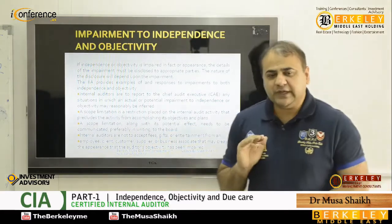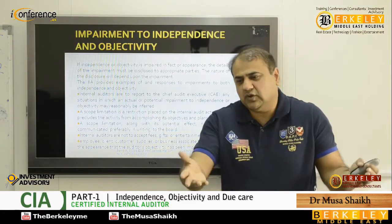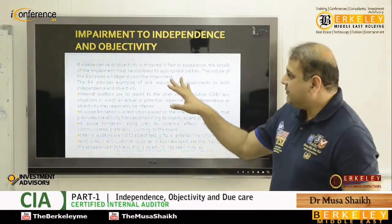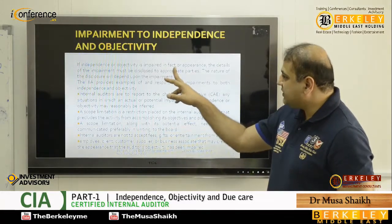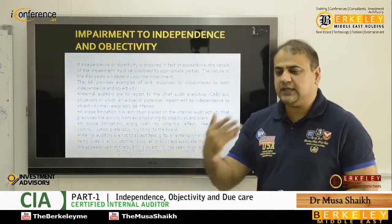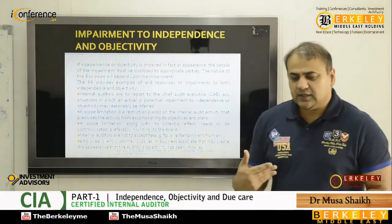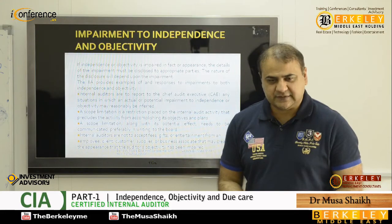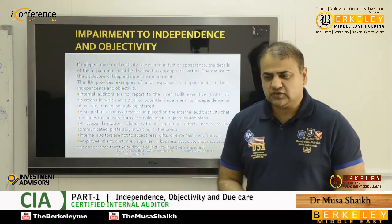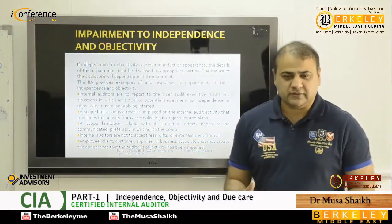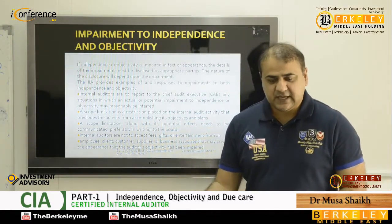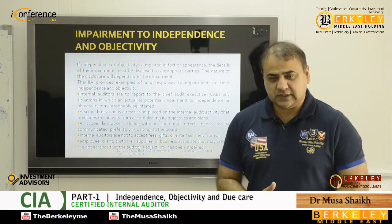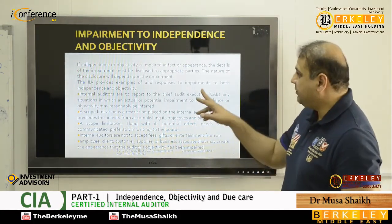Impairment to independence means a situation where we say this is not fair and we should not trust you. Independence or objectivity can be impaired in fact or in appearance. For example, if I invite my internal auditor to watch a movie with me on a weekend and give special expensive gifts — apparently I have impaired their objectivity. If the auditor accepts expensive gifts and starts spending time with the auditee, that is not allowed. That is impairing objectivity. IIA provides examples and responses to impairment.